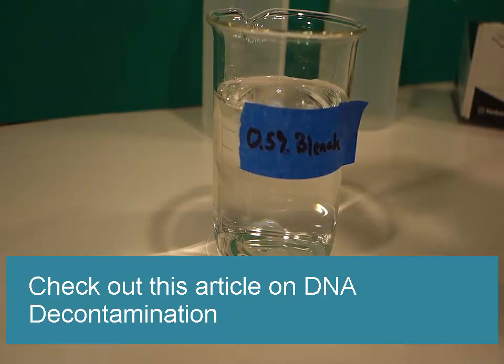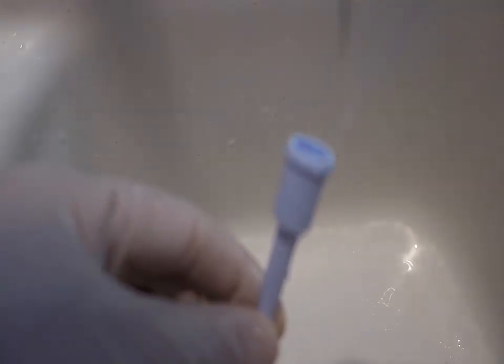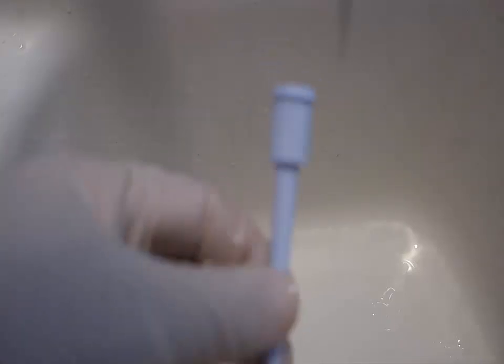If you need to decontaminate DNA, RNA, or a biohazard, immerse the barrel in 0.5% bleach for an hour. After an hour, rinse again with tap water and then with 70% isopropanol to dry out the water. Shake out the excess isopropanol.